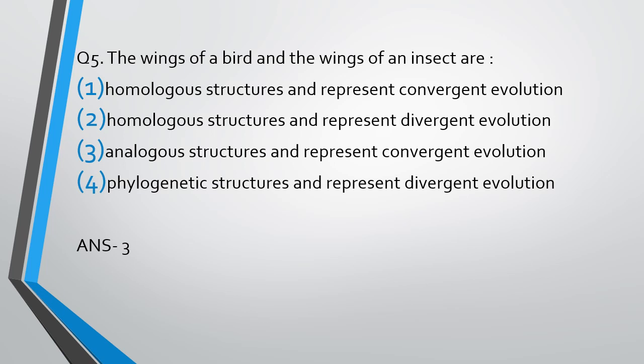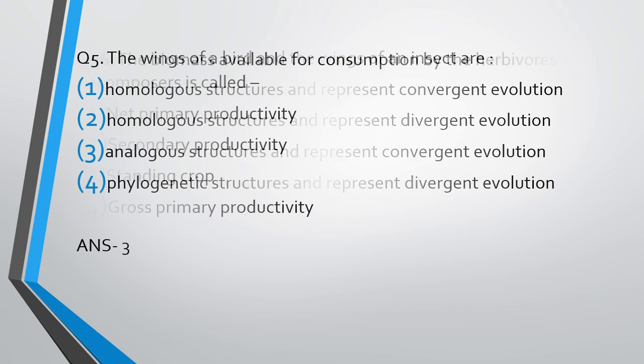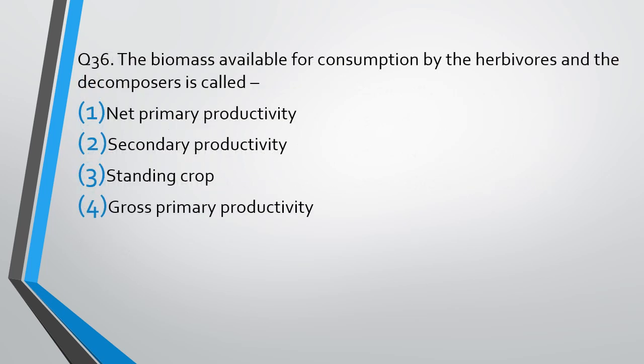Question number 36. The biomass available for consumption by herbivores and decomposers is called the net primary productivity, secondary productivity, standing crop, or gross primary productivity. The correct answer is option 1, net primary productivity is the biomass that is available for the consumption by the herbivores.